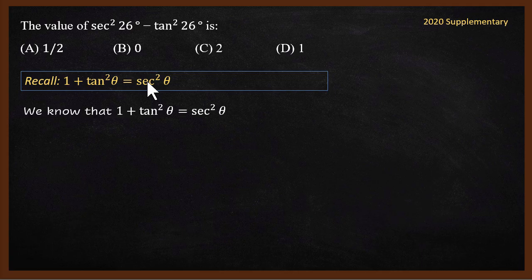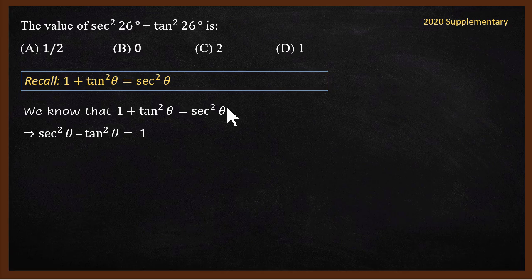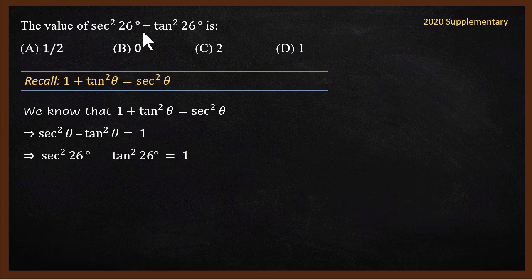Using the identity, we know that 1 plus tan² θ equals sec² θ. Rearranging, sec² θ minus tan² θ equals 1. Even though θ here is 26°, for any acute angle, the value of sec² θ minus tan² θ is always 1. So the correct answer is D.